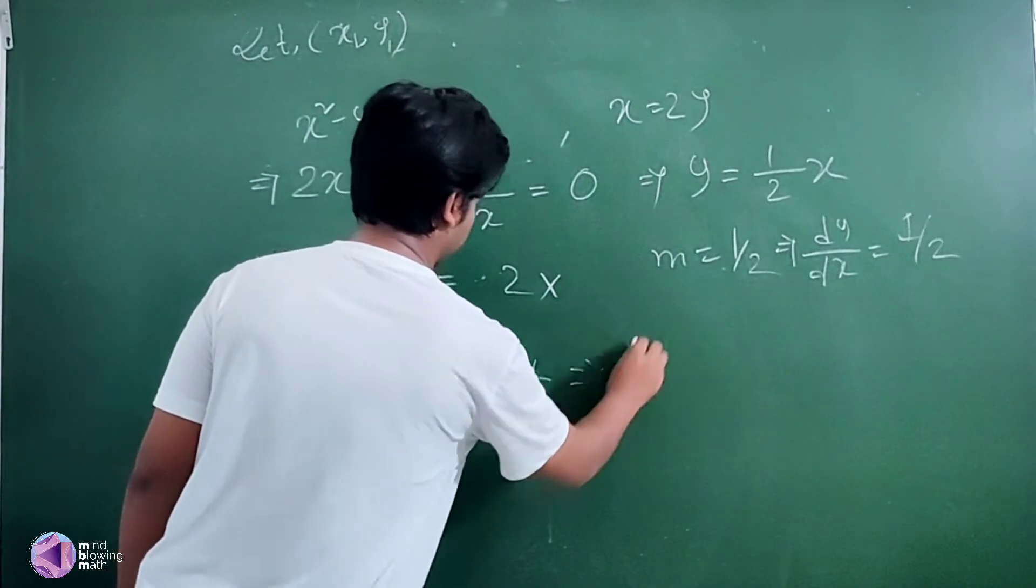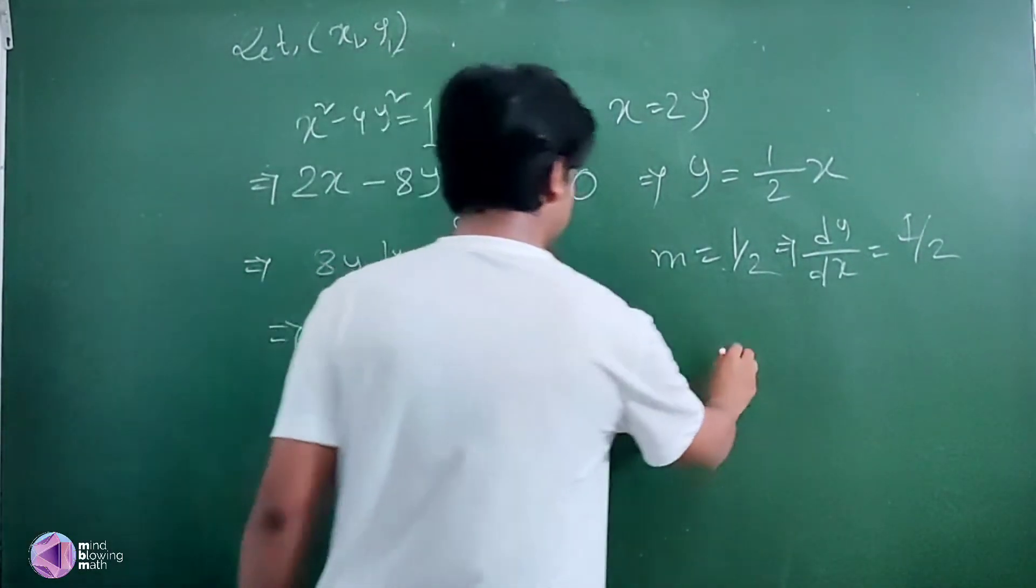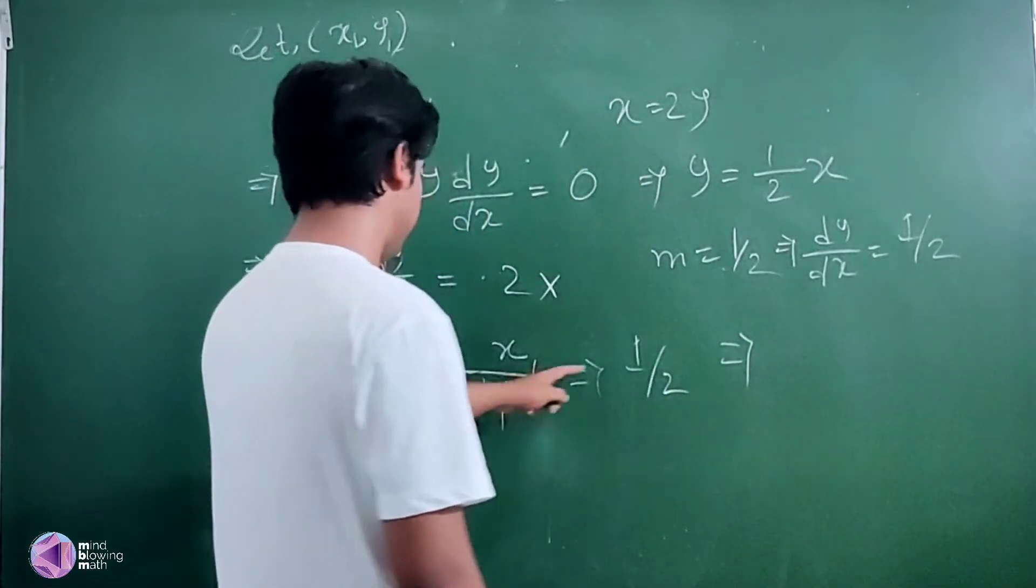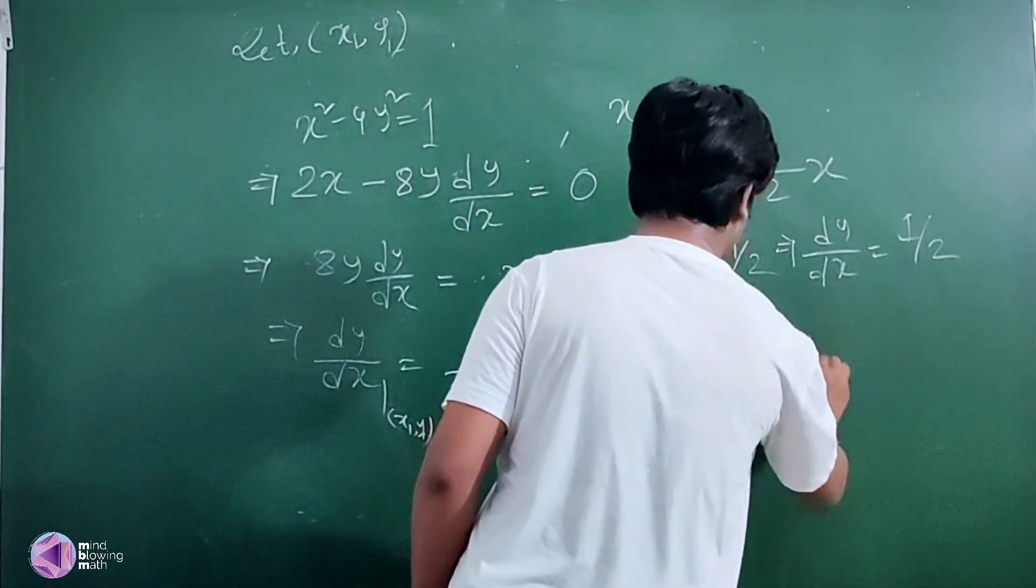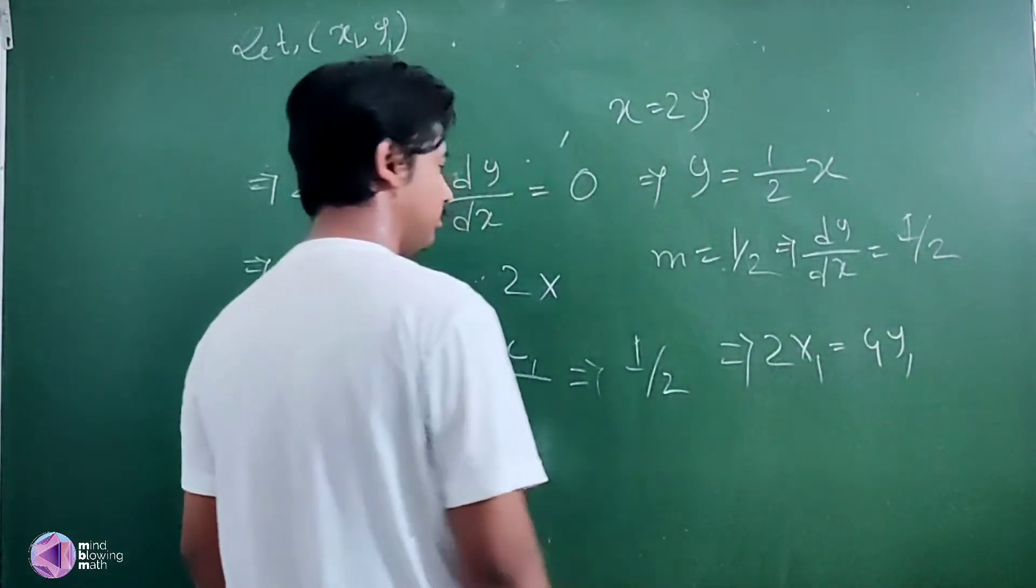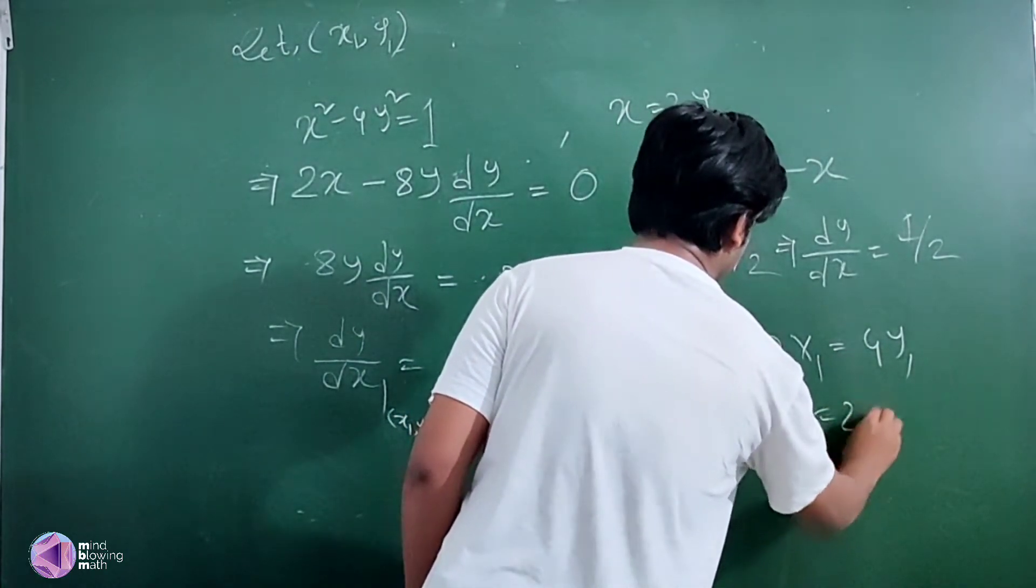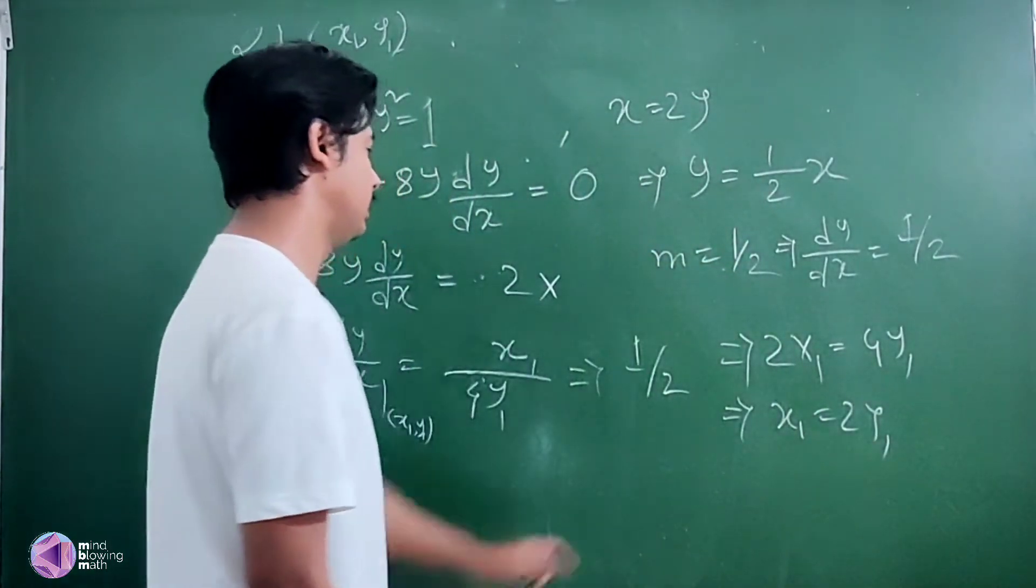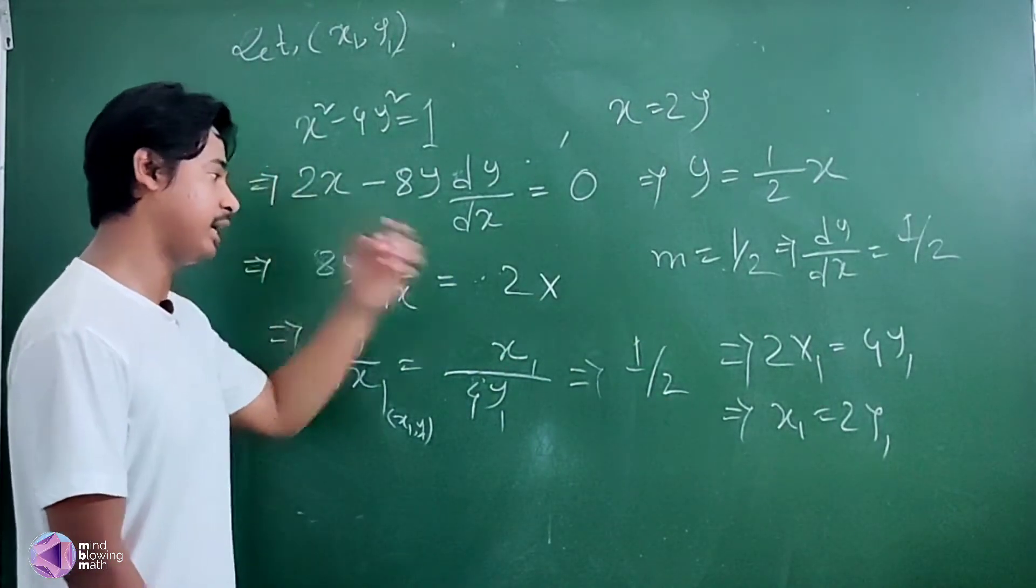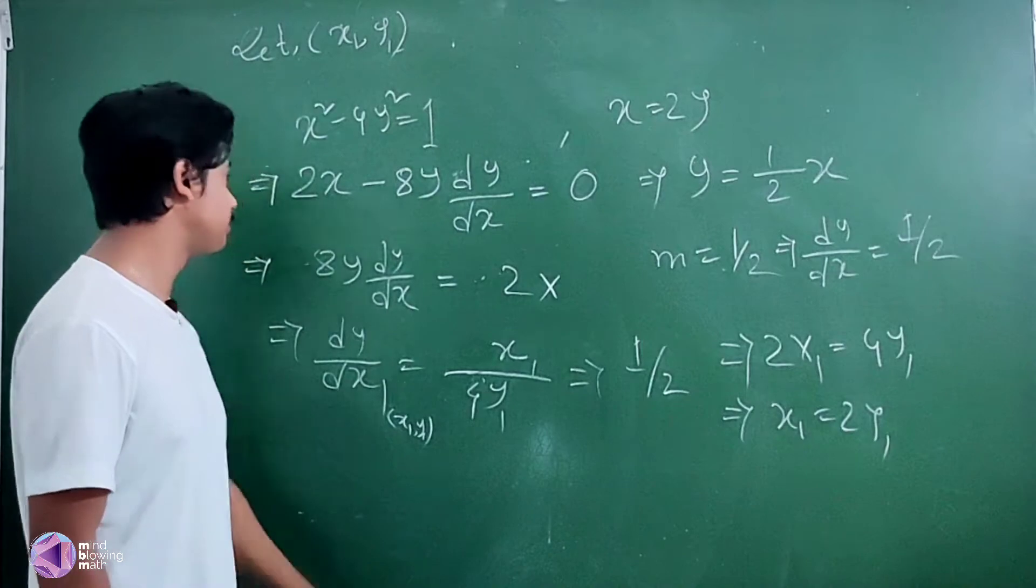So x1/4y1 is equal to half. Therefore, twice x1 is equal to 4y1, or x1 equals 2y1.